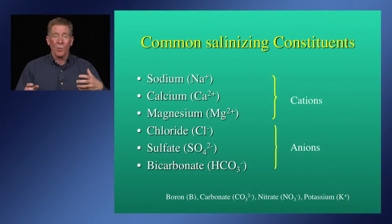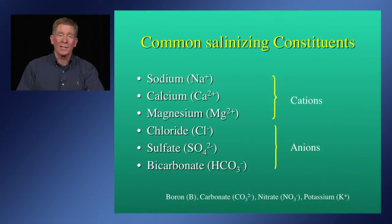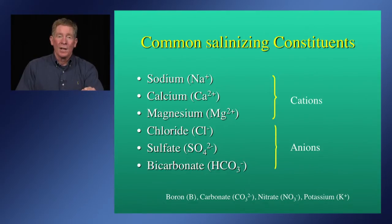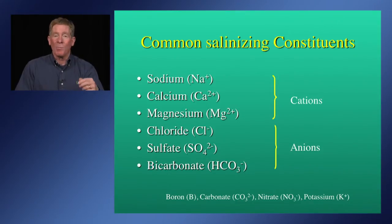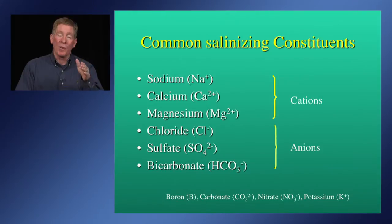These salts dissolve into water and are broken into different groups — cations and anions. The cations are positively charged constituents and the dominant ones are sodium, calcium, and magnesium. The anions are the dominant negatively charged constituents: chloride, sulfate, and bicarbonate. All irrigation water has these constituents, but what varies is both the concentration and the different ratios of these ions. Also present in smaller concentrations are things like boron in the parts-per-million range. Boron can be problematic because there's a small window of concentration between what plants need for optimal growth and what becomes toxic.